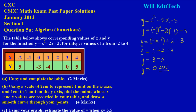So when x = -1, y = 0. Let's fill that in — 0 as our y value when x = -1. Now let's quickly look at the second value they're asking us to find: when x = +2, what will y be?